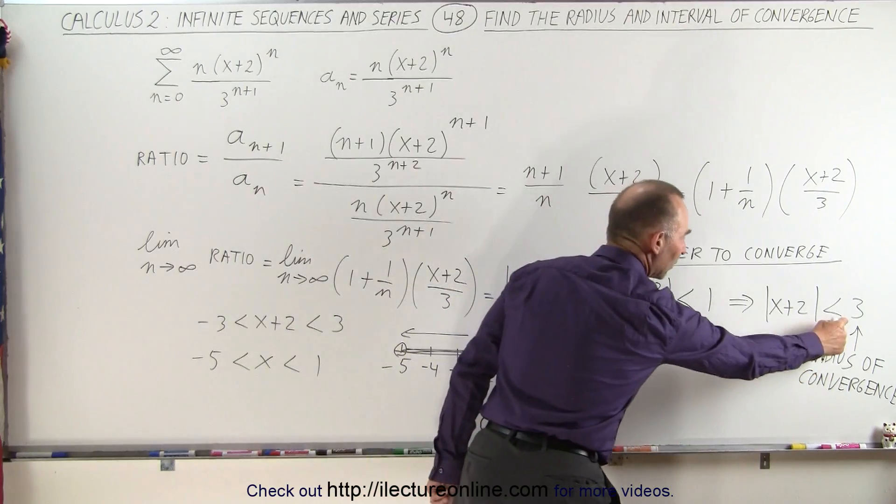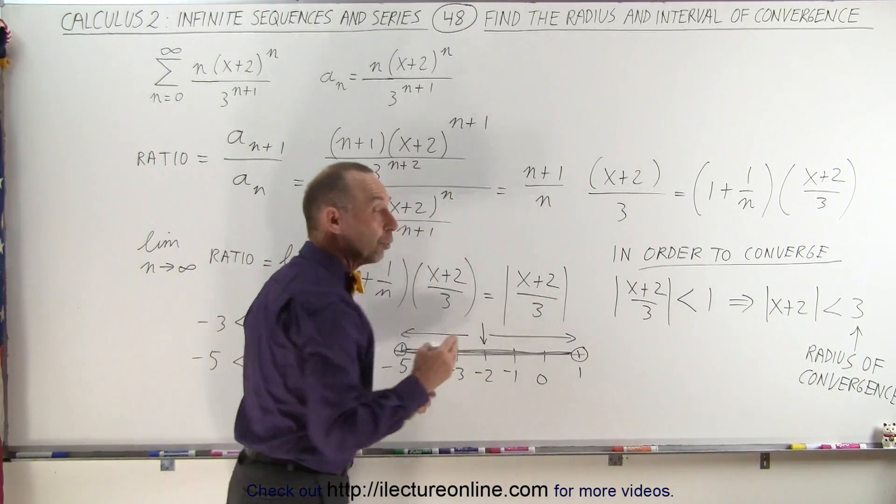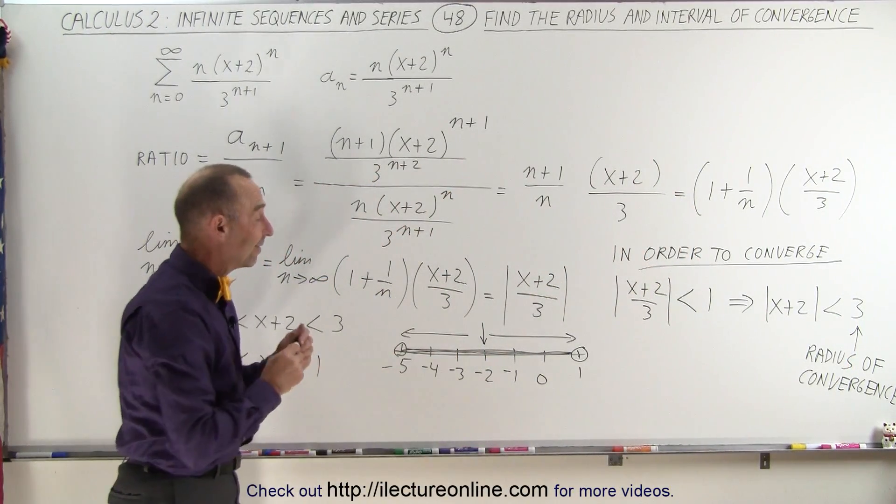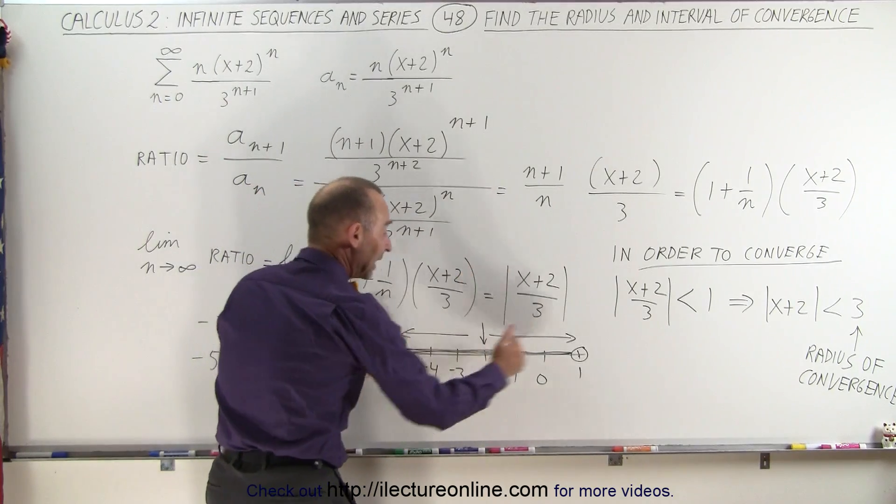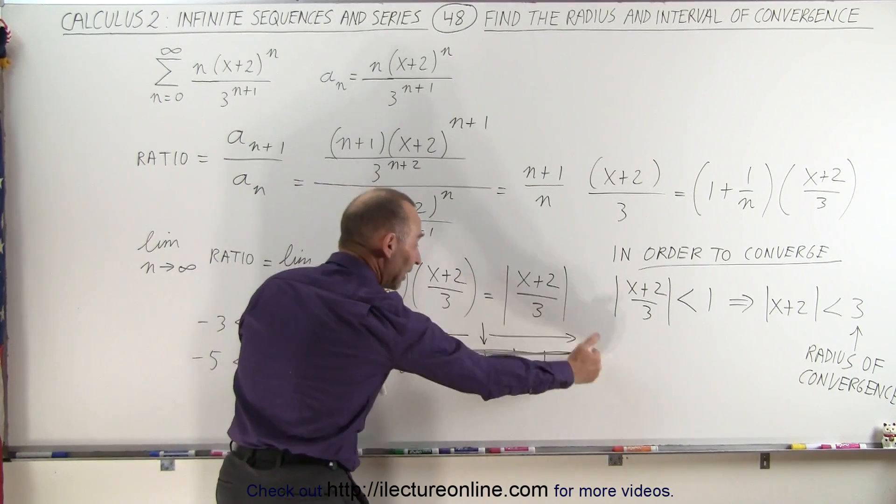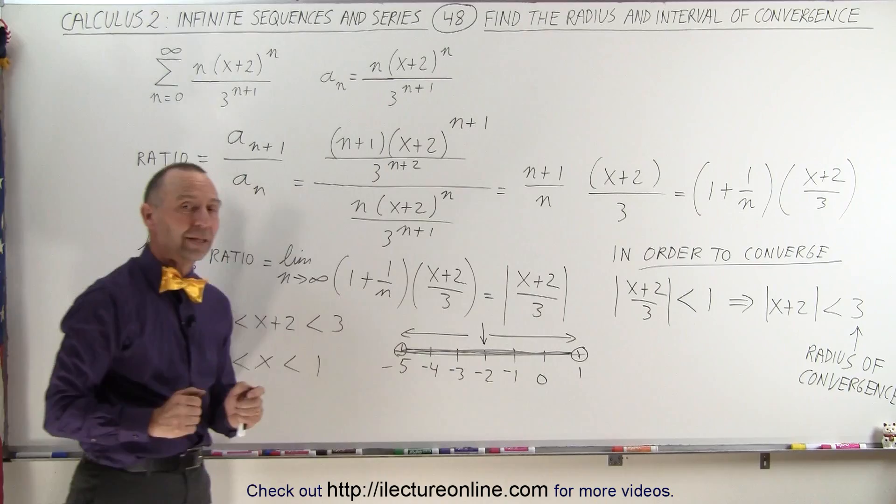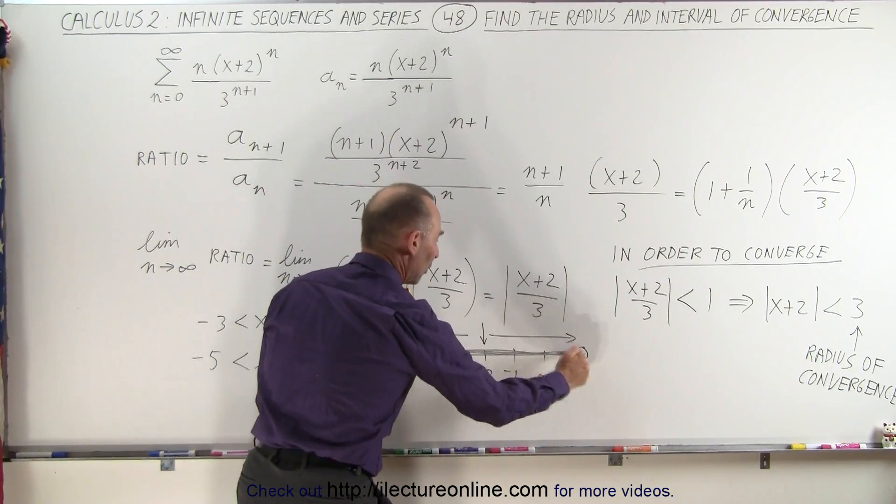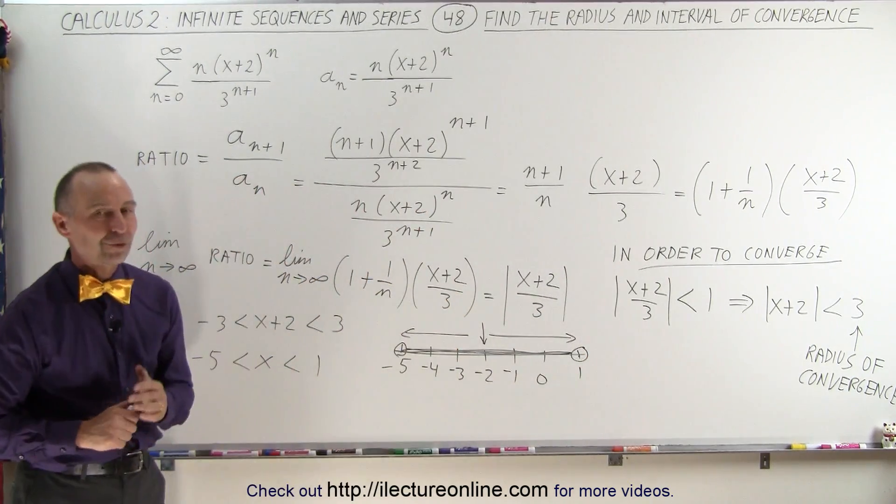Notice the 3 here was the radius of convergence. The radius of convergence means it's the distance from the middle value of the interval to either edge of that interval. So the radius is this distance, and this is what we call the interval of convergence.